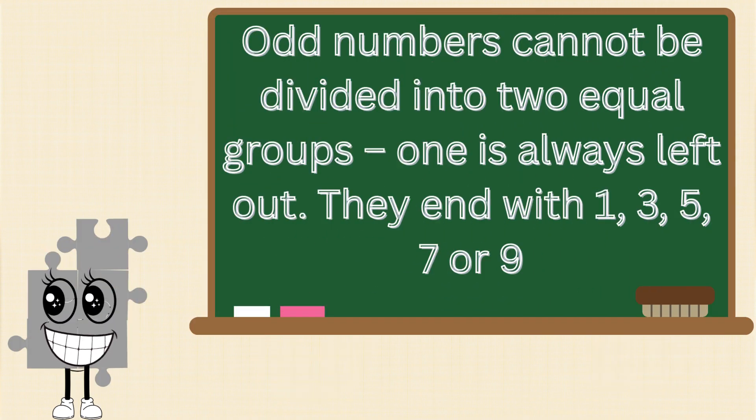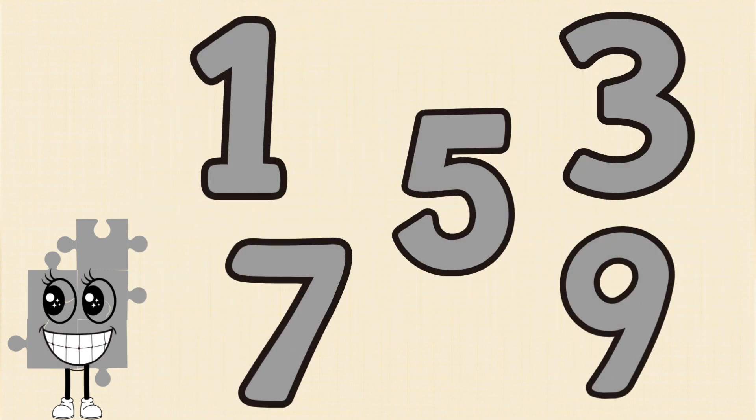Odd numbers cannot be divided into two equal groups, one is always left out. They end with 1, 3, 5, 7 or 9.